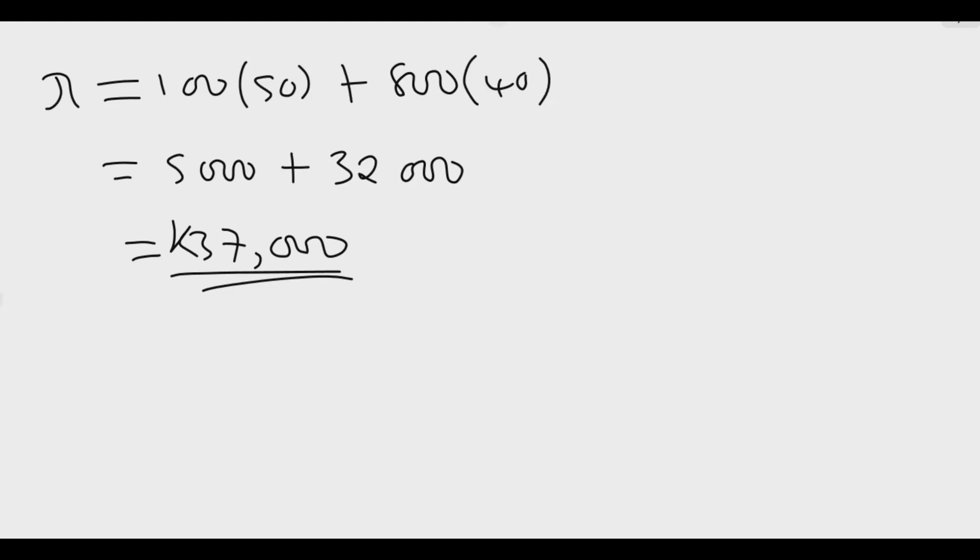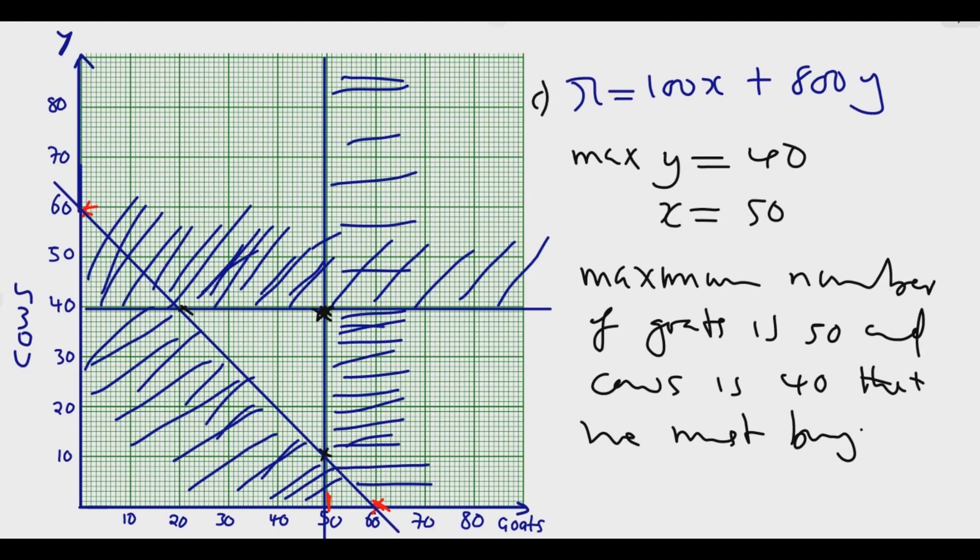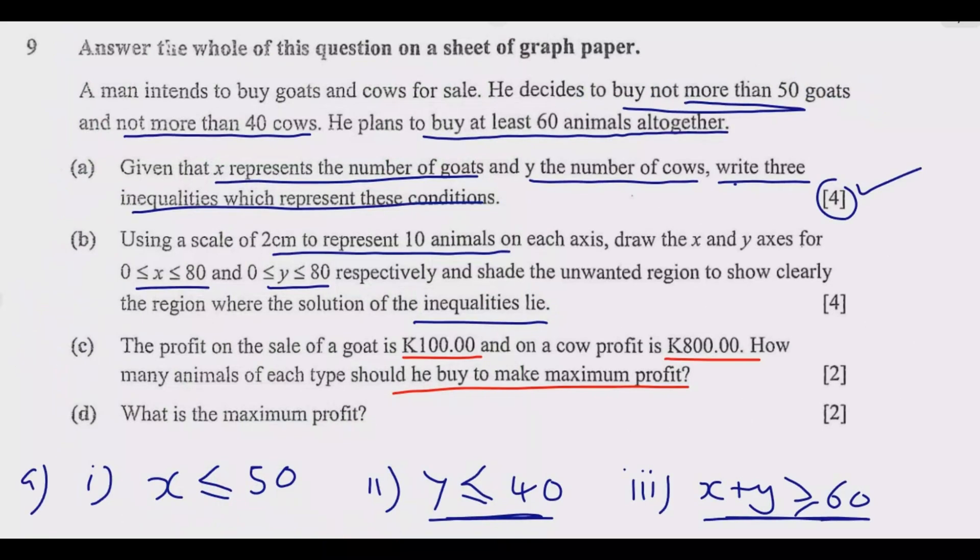If I get this point below here, which is 10 cows and 50 goats, 800 times 10 is 8,000 plus 50 times 100 will be 5,000, so it will just be 13,000, which is way less than 37,000. In the same case, if I came and got this point which is 20, 40, so it will be 100 times 20, it will give me 2,000 plus 40 times 800, so 32,000 plus 2,000 is 34,000. So it will be lower than 37,000. So this is how you answer this question to get the full marks.